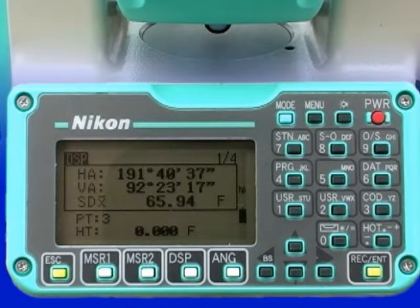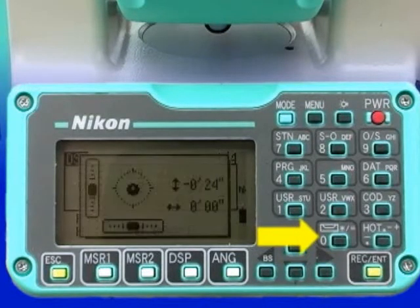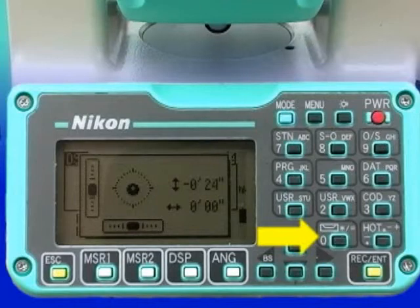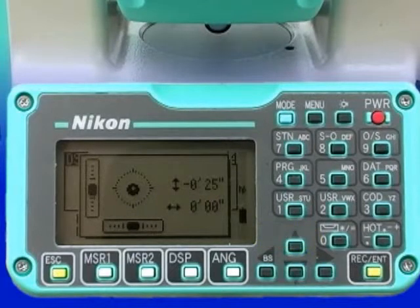In the event that the instrument gets bumped, moved, or otherwise compromised, the out-of-level screen will display. This screen can also be accessed by pressing the zero key on the numeric pad. Fine leveling is done using the three leveling screws under the leveling plate.